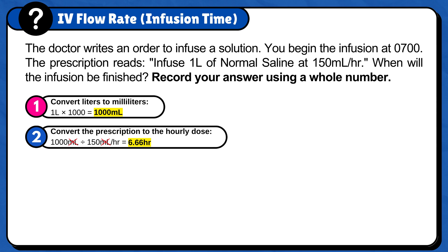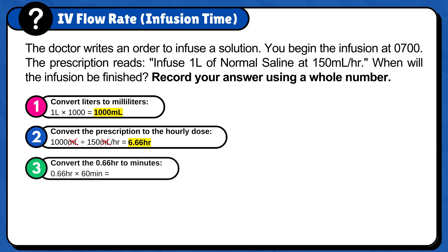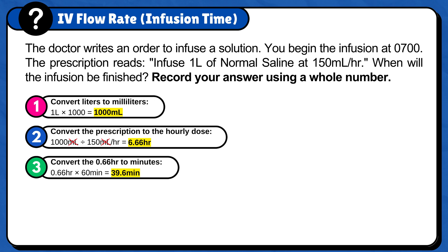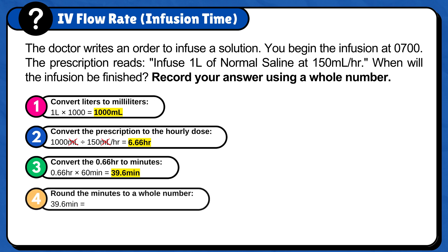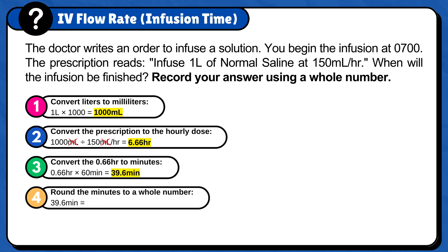The next step is to convert 0.66 hours to minutes. Since the question is asking to record the answer using a whole number, we need to round 39.6 minutes to 40 minutes. The total time is 6 hours and 40 minutes.